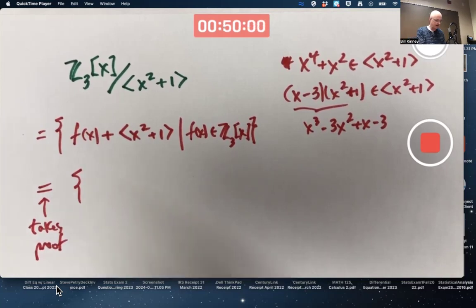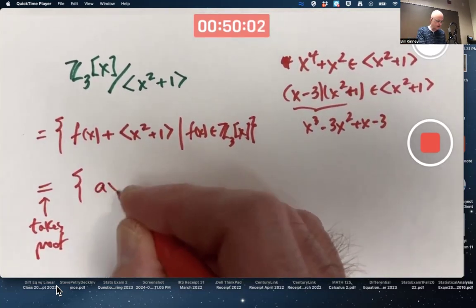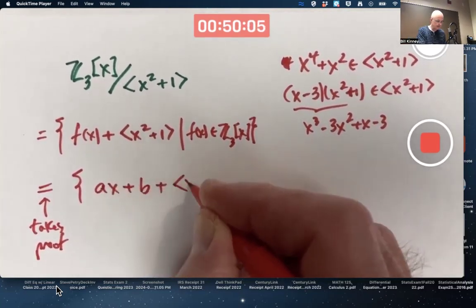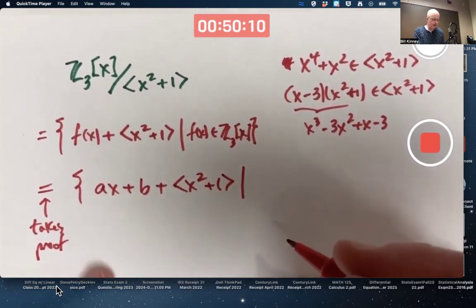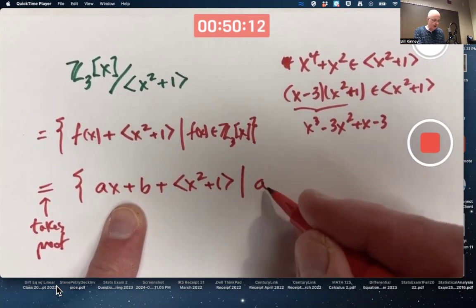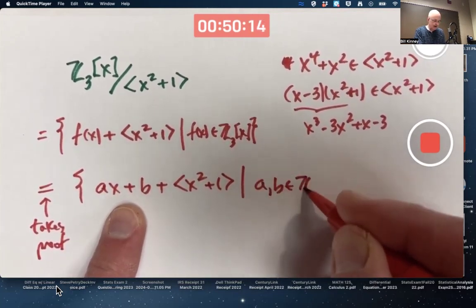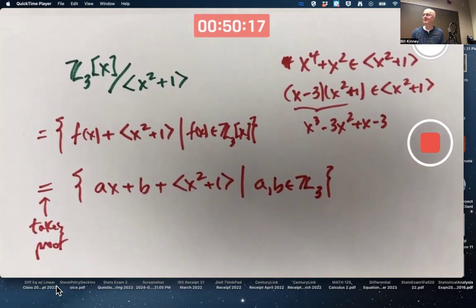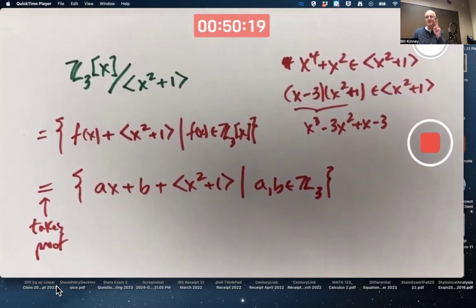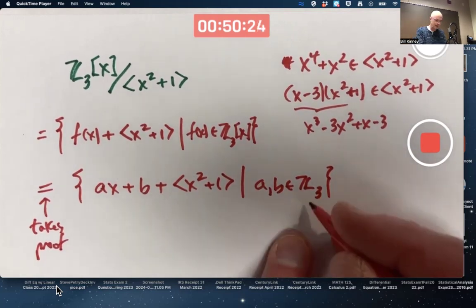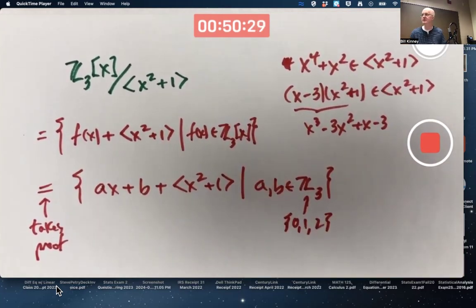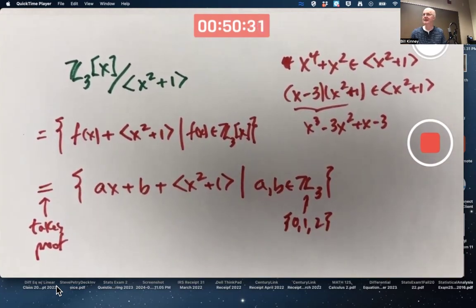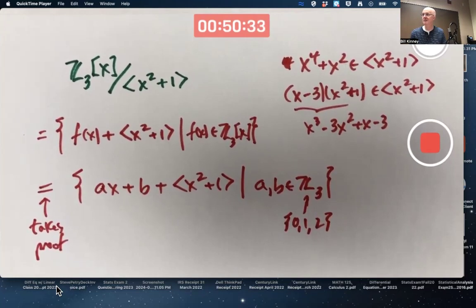You can always, in fact, use linear coset representatives, where the a and the b, the coefficients of that linear polynomial, are from Z₃. And therefore, this has got to be a finite set. Because those are just two numbers, a and b, that are from the same finite set, Z₃, consisting of 0, 1, and 2. In fact, there's three choices for a, there's three choices for b. Basically, there's three squared, nine elements in this factor ring.